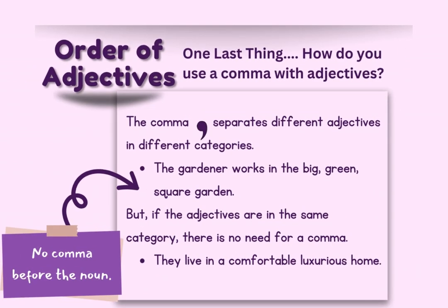One last thing about the order of adjectives — grammar also has rules about when to use commas in a list of adjectives. If adjective categories are different in a sentence, you use a comma in between each of the category adjectives in the list. However, you do not put a comma immediately before the noun or pronoun. For example: 'The gardener works in the big, green, square garden' — note there is no comma after 'square.' Secondly, if you have adjectives from the same category, they do not use any commas: 'They live in a comfortable, luxurious home' — 'comfortable' and 'luxurious' come from the same qualifier category.